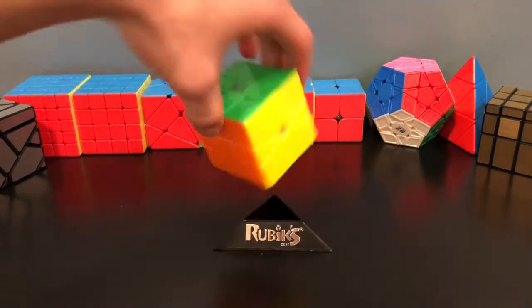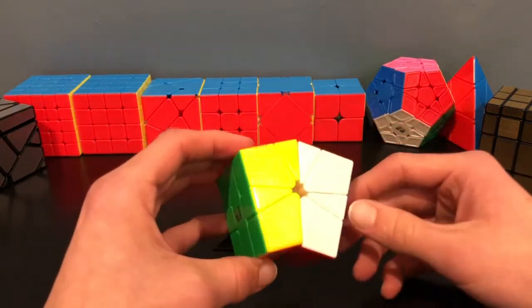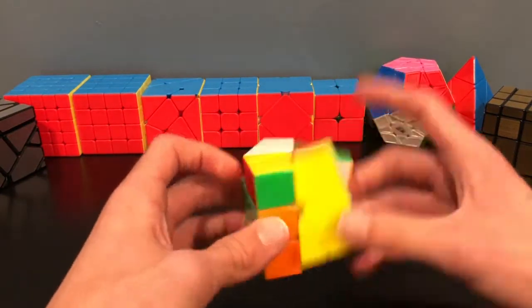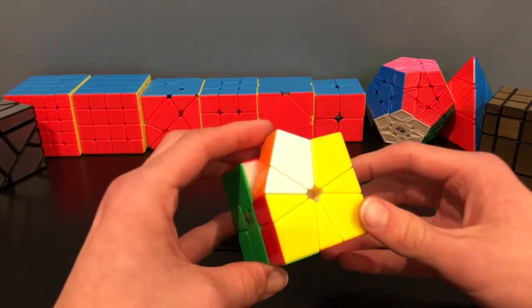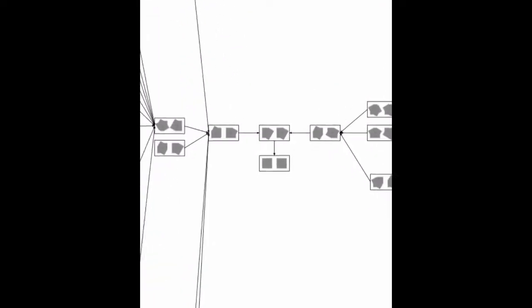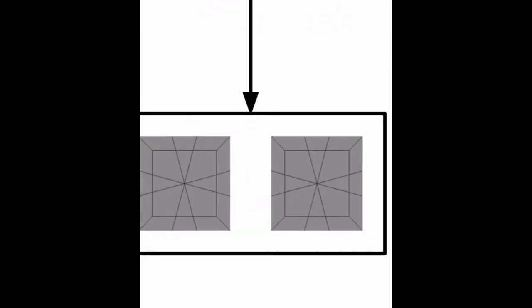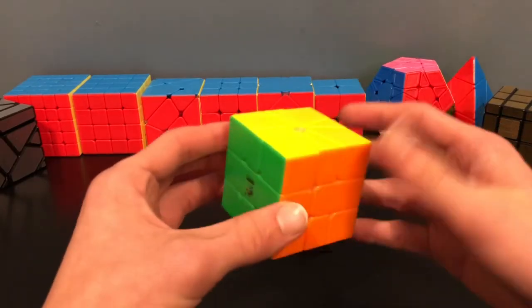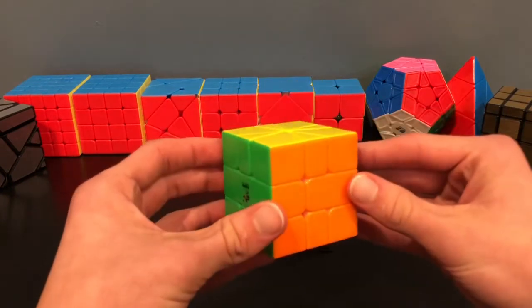Every single time you turn the Square-1 you're essentially making it into a different shape. So as you solve cube shape you are going through a lot of different shapes. Therefore you should be able to just make a flowchart consisting of all the shapes all converging onto the cube. So that's exactly what I did.